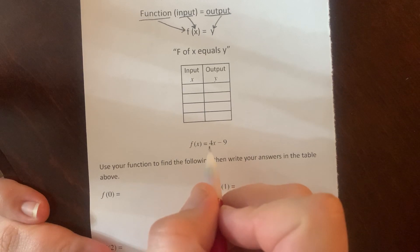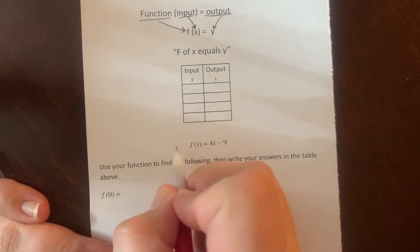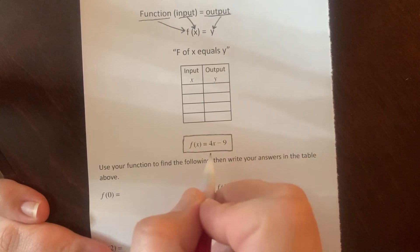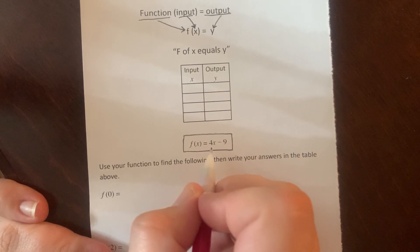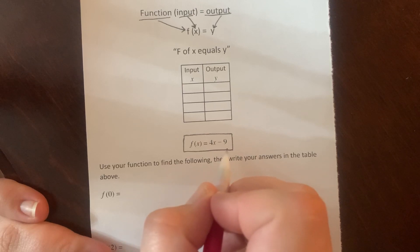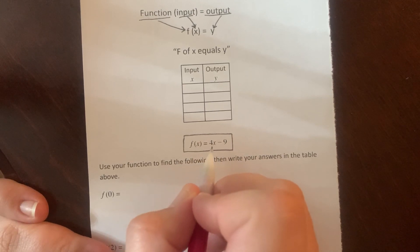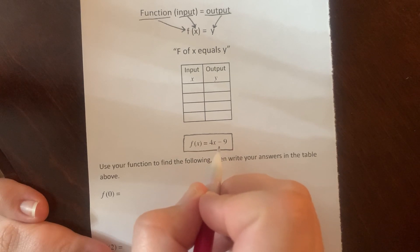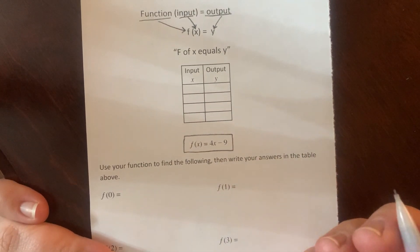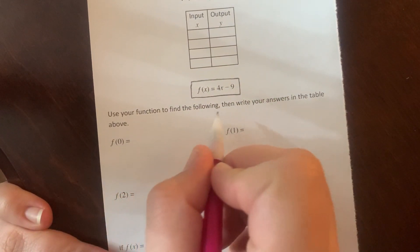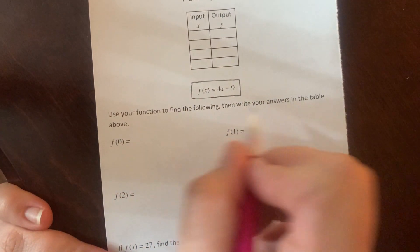F of X equals 4X minus 9. So this function here, written in function notation, this equation written in function notation, tells us exactly how X and Y are related to each other. When I put X in as an input, I do 4 times that number minus 9, and that will give me my output. So we're going to do that down here. Use your function to find the following, then write your answers in the table above.